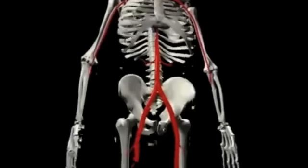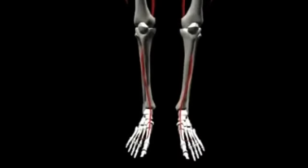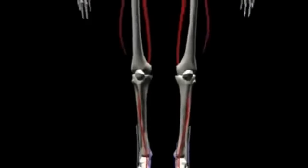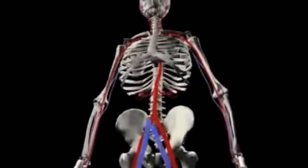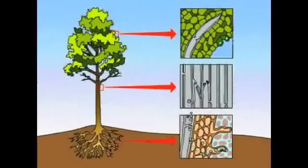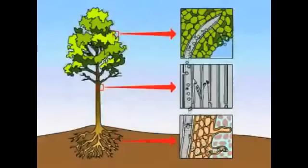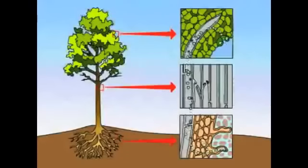It is essential for blood plasma, which is 90% water, to stick to itself as it is pumped throughout the human body. Capillary action in plants also involves cohesion, because as water evaporates from the plant's leaves, hydrogen bonding pulls up water molecules through water-conducting cells all the way from the tree's roots.